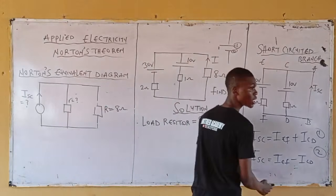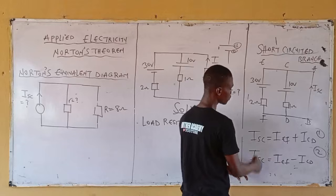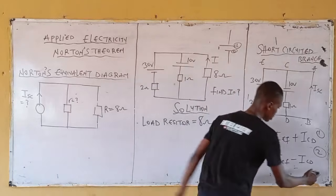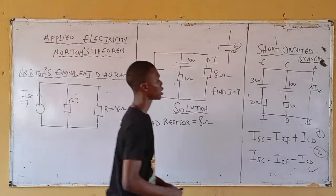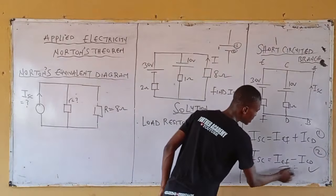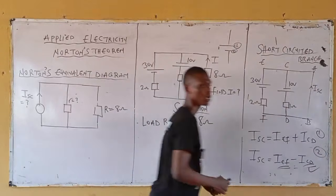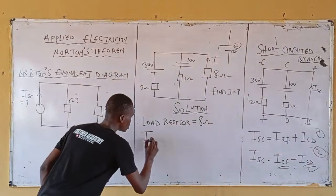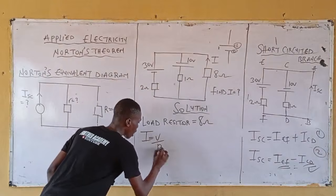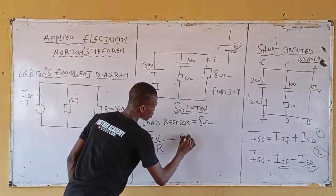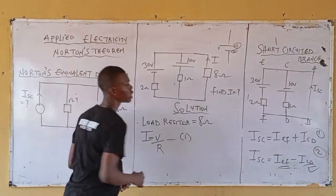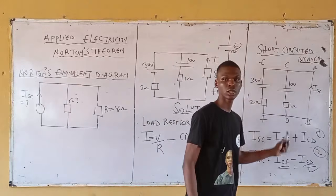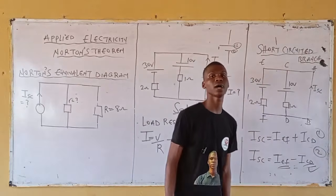Meaning the correct formula to use for I short-circuit is case two. This is what we are going with. Now, how do you calculate IEF and ICD? From Ohm's law, I equals V over R — call this equation one. Implementing equation one to branch EF and branch CD, you get IEF and ICD.